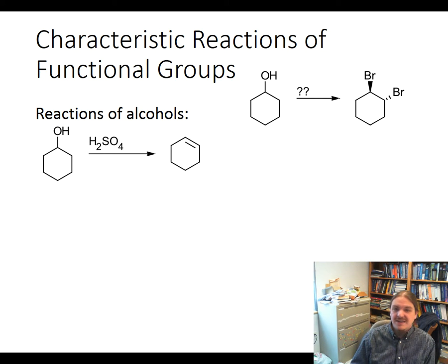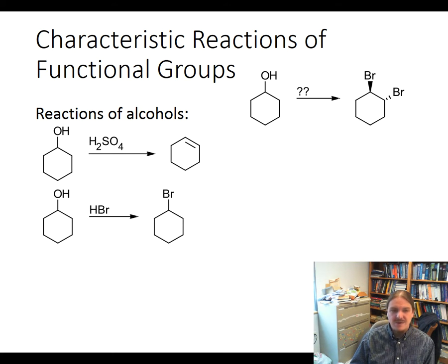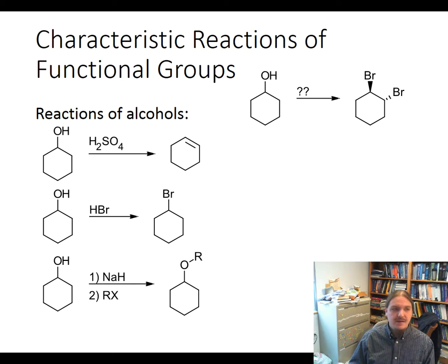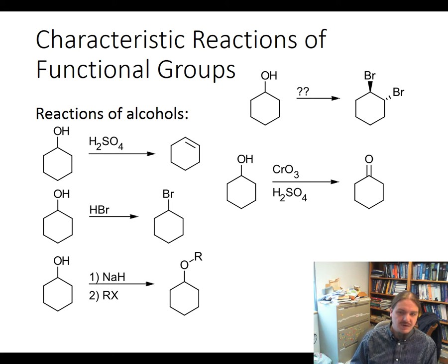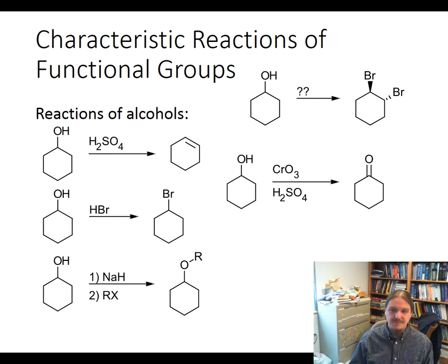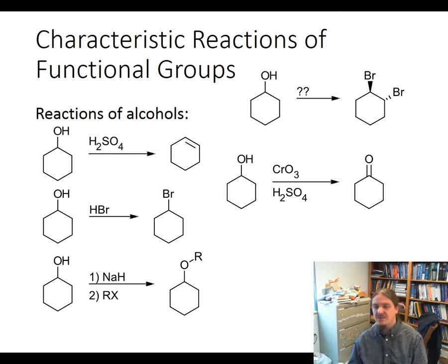Alcohols can undergo a dehydration reaction in the presence of strong concentrated acids like sulfuric acid. If the acid is a nucleophilic acid, like HBr or hydrogen bromide or hydrogen chloride, you can do a substitution reaction and convert alcohols into alkyl halides. Alcohols can also be converted into ethers by deprotonating them with a really strong base followed by an SN2 reaction with an appropriate alkyl halide. Additionally, alcohols can be oxidized to carbonyl compounds — in this case, cyclohexanol oxidized to the ketone using chromium trioxide and acid. One of these reactions might feel like a good first step because you know how to convert the product of that first step into something that looks more like the target compound.